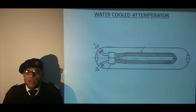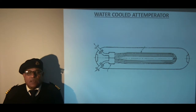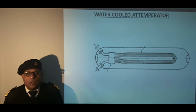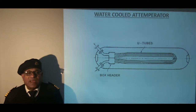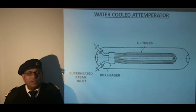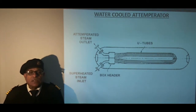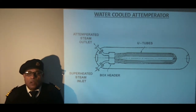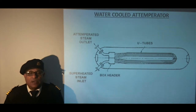This sketch shows an integral surface type water-cooled attemperator which is located in the steam drum. Let us see the components of the attemperator and the flow of steam through it. We can see the box header to which U-tubes are attached. Superheated steam enters at the bottom connection of the header and leaves from the upper end of the box header to the secondary superheater. U-tubes attached to the header are submerged in water, which gives up their heat to the surrounding water. Supply of steam to the attemperator is through a three-way valve, which is used to automatically maintain the steam temperature through a controller.